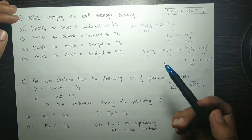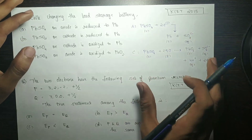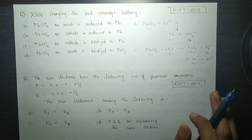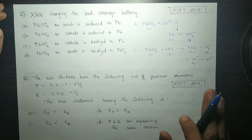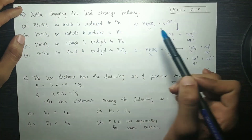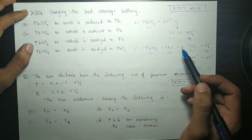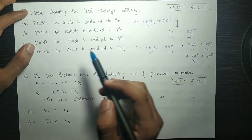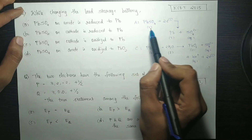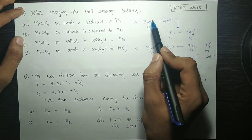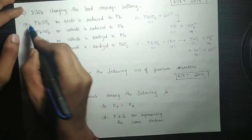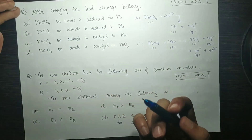Let me go through this reaction. While charging the lead storage battery, let's analyze the options. PbSO4 on anode is reduced to Pb — the anode reaction is done. PbSO4 on anode is converted to Pb — this is correct. PbSO4 on cathode is reduced to Pb, and PbSO4 on cathode is oxidized to Pb — no chance. PbSO4 on anode is oxidized to Pb — it's worked hard but incorrect. The correct answer is that PbSO4 on anode is reduced to Pb.